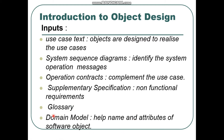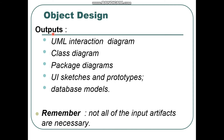Basically in the domain model we have conceptual classes, and from conceptual classes we get names and attributes of software objects — in which we have methods or operations. Note that the domain model does not yet have methods or operations. These are the inputs. Now let's see the outputs in object design.